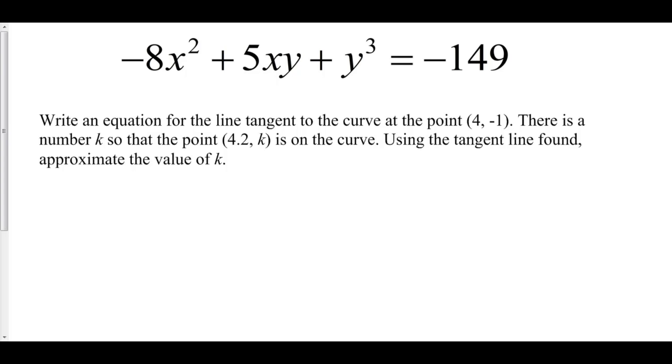Consider the following curve. Now write an equation for the line tangent to the curve at the point. There is a number k so that the point is on the curve. Using the tangent line found, approximate the value of k. We are being asked to create a linear approximation centered at x equals 4 for the following curve.